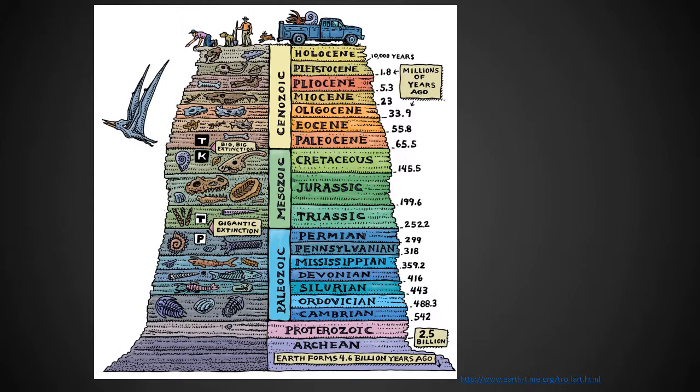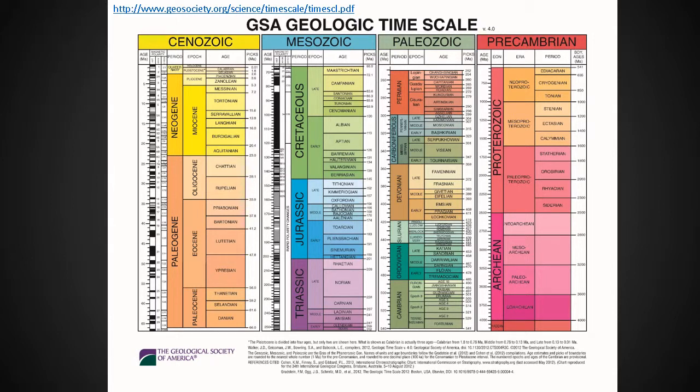There are two mass extinctions shown on the column: the Permian-Triassic extinction and the Cretaceous-Tertiary extinction. The Tertiary period includes the Cenozoic era except for the Pleistocene and the Holocene. All dinosaurs went extinct prior to the K-T extinction. Using the principle of superposition, you would not expect to find dinosaurs in rocks formed during the Cenozoic era. This is the Geological Society of America Geologic Timescale, and we will be using it periodically throughout the course.